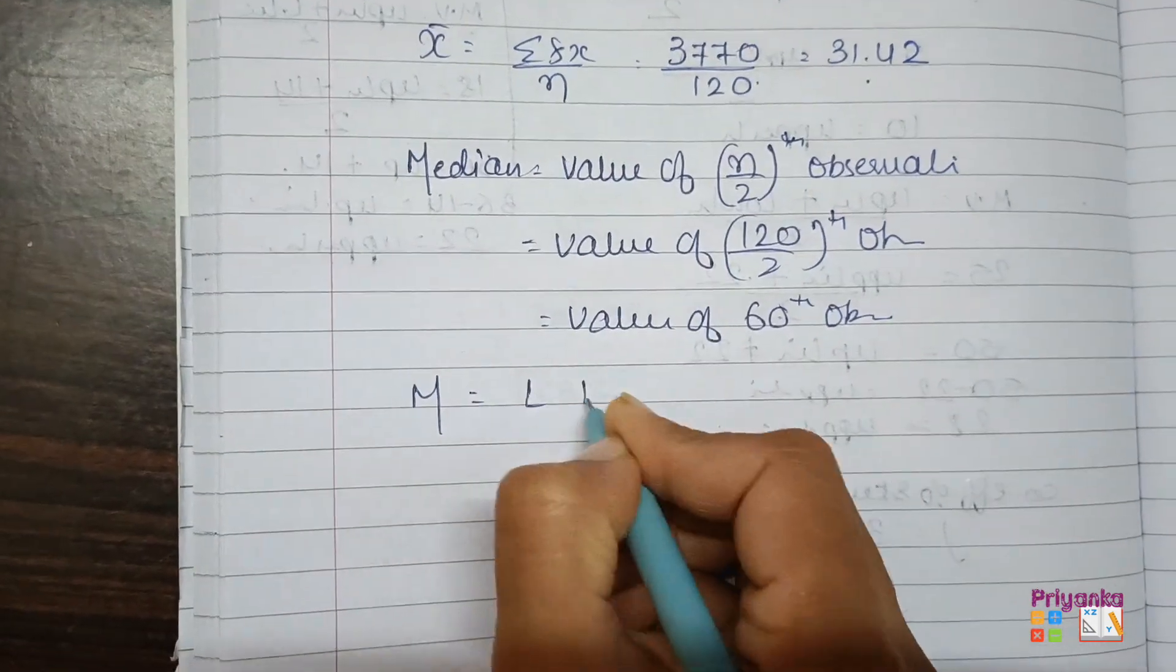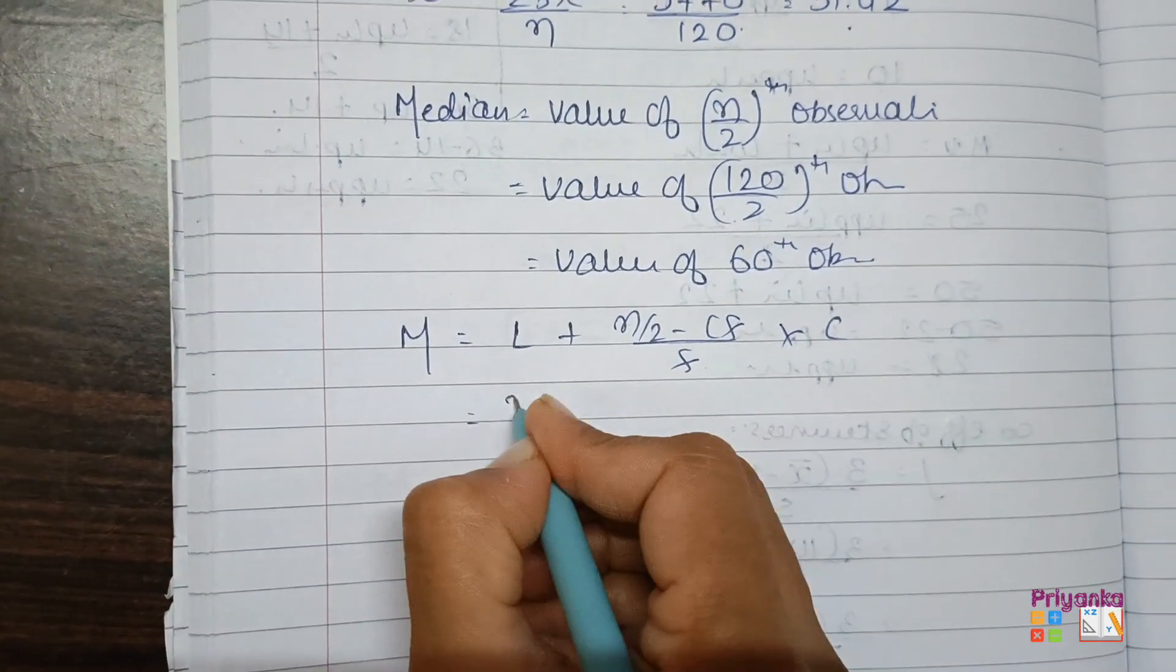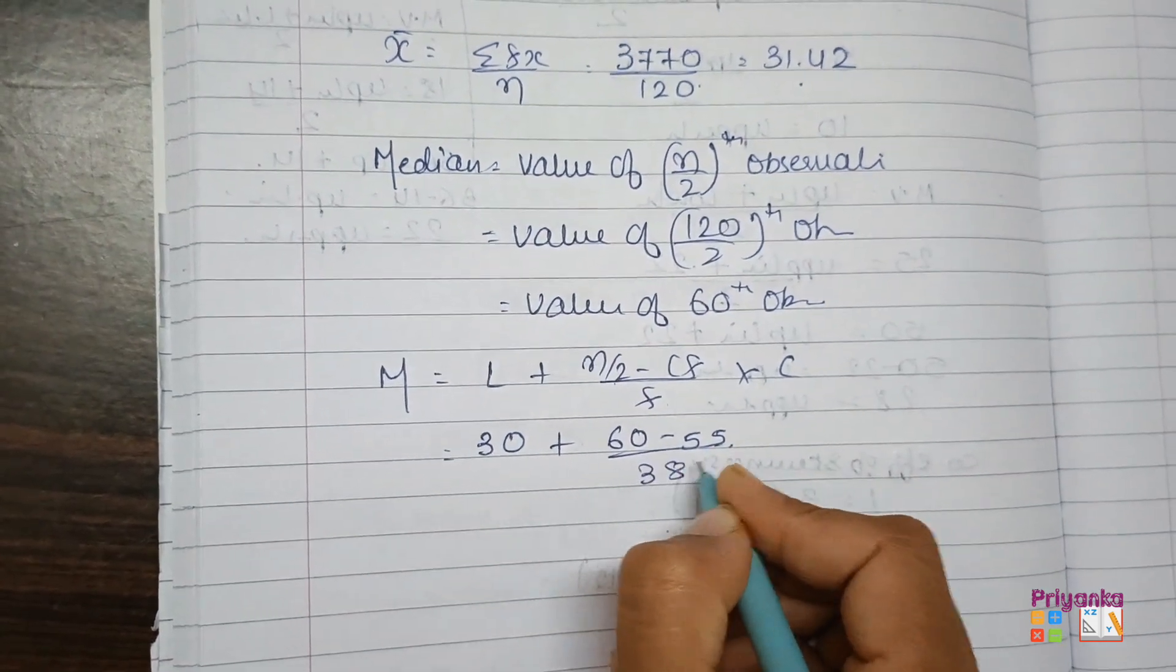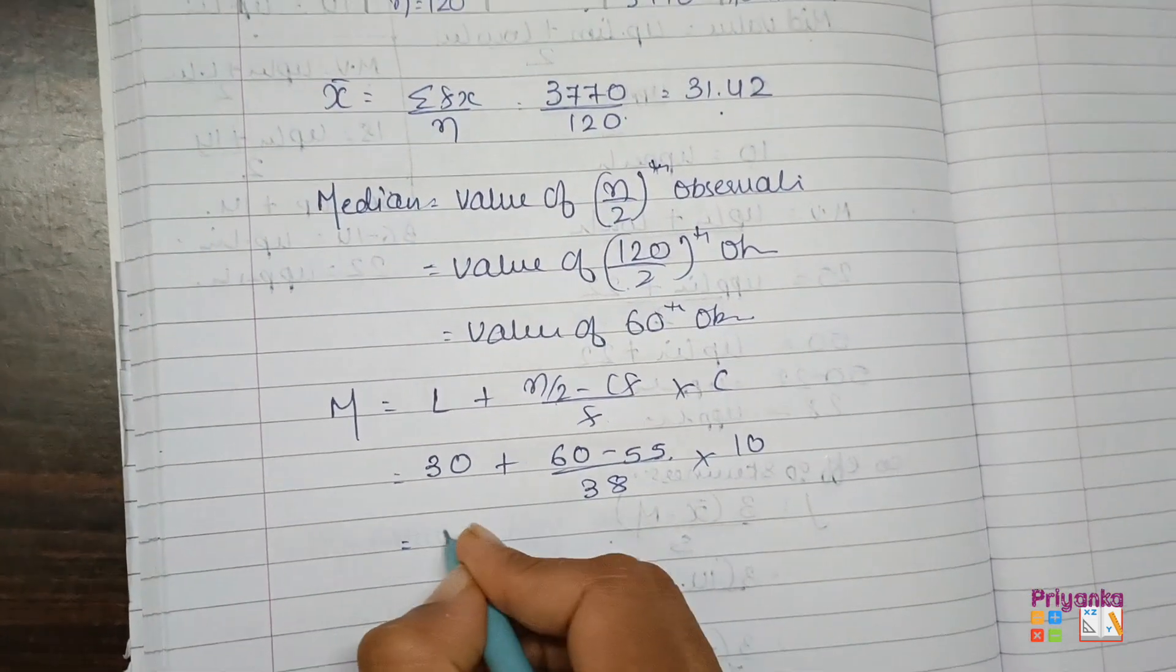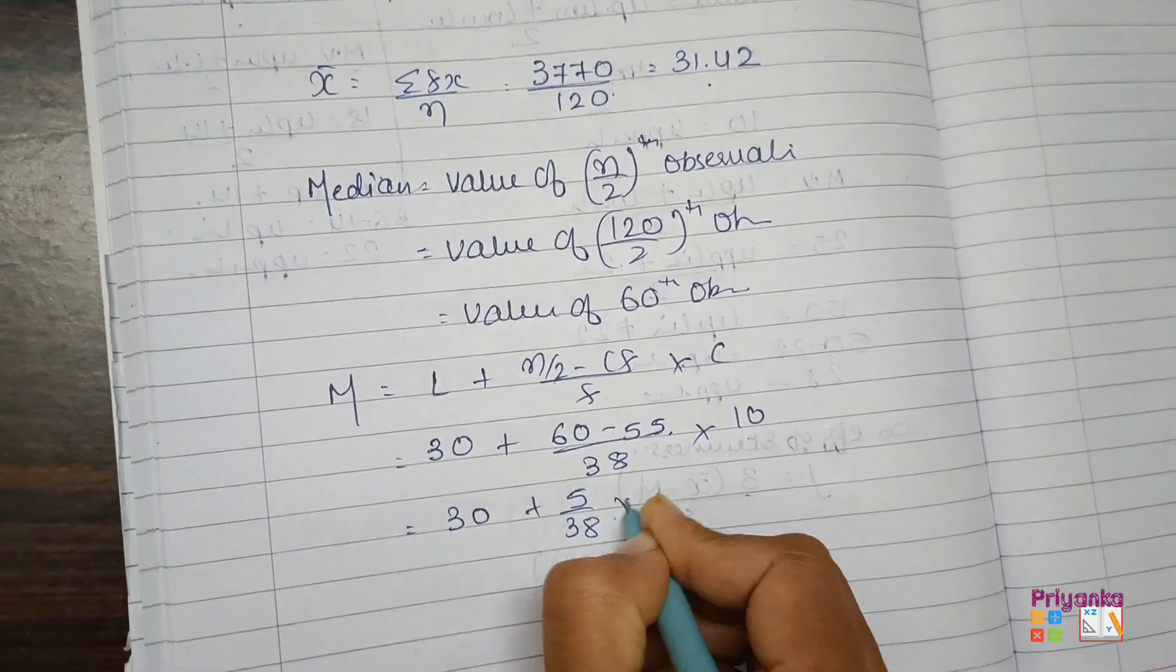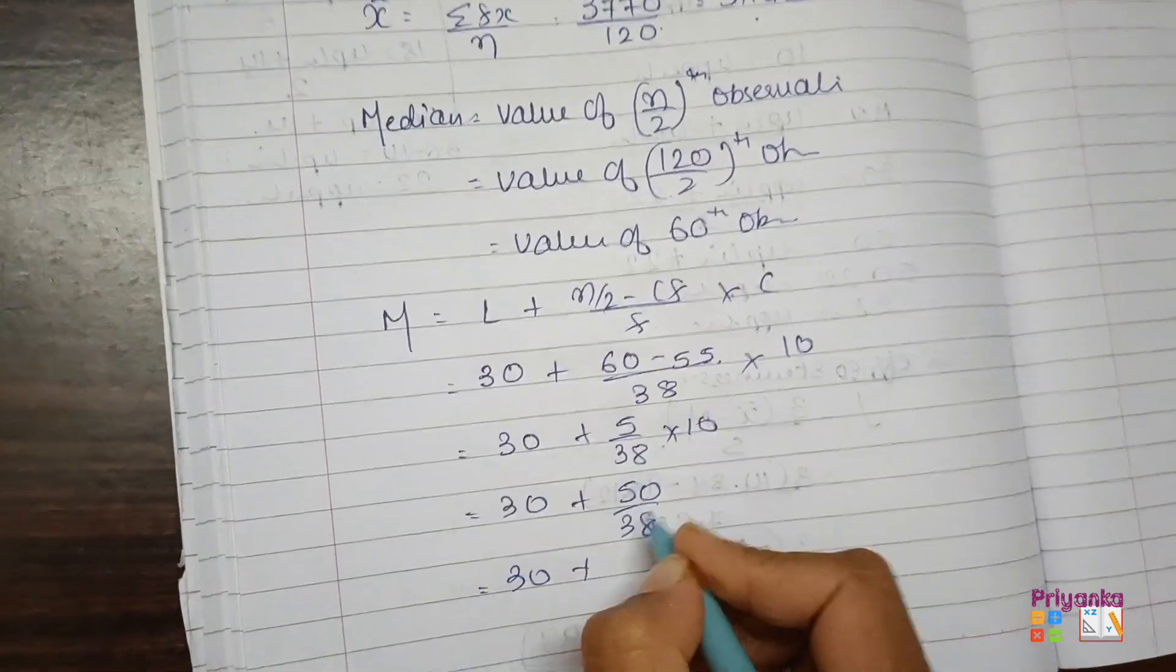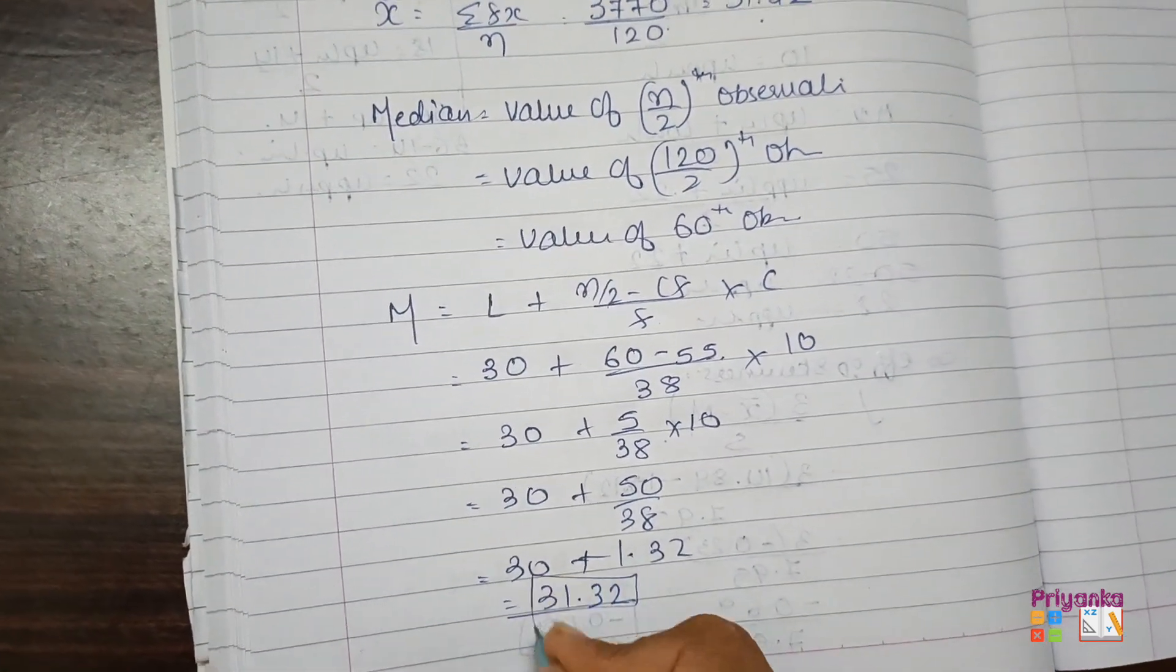For median, L plus n upon 2 minus CF upon frequency into C. The lower limit we found is 30 plus n upon 2, 60, CF we found is 55, and the frequency was 38 into the class length 30 minus 40, 10. The subtraction of this, that is 5 upon 38 into 10, the 5 into 10 will be 50 upon 38, 30 plus the division of this 1.32. And the final answer 31.32. That's the median we found.